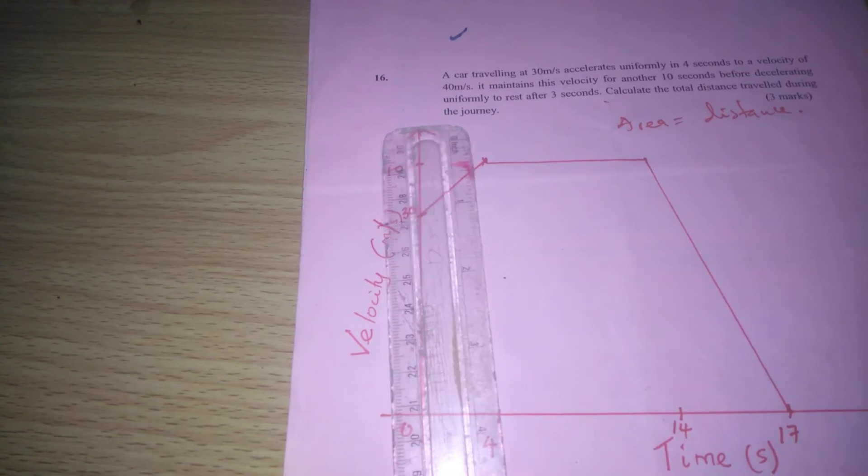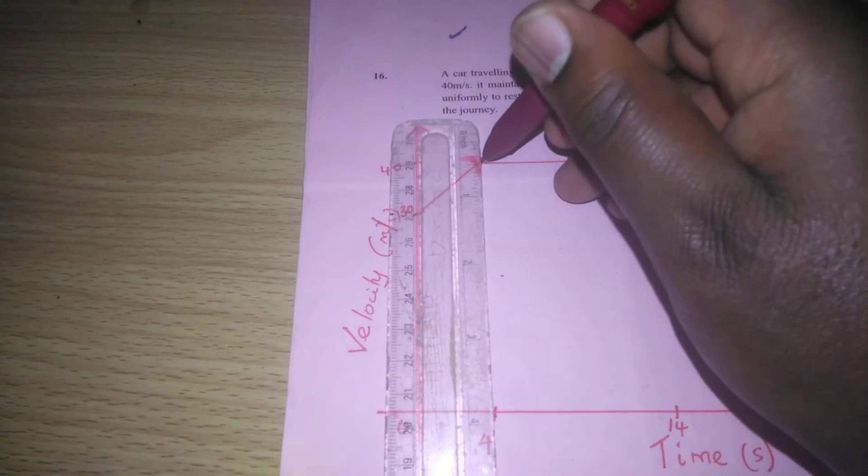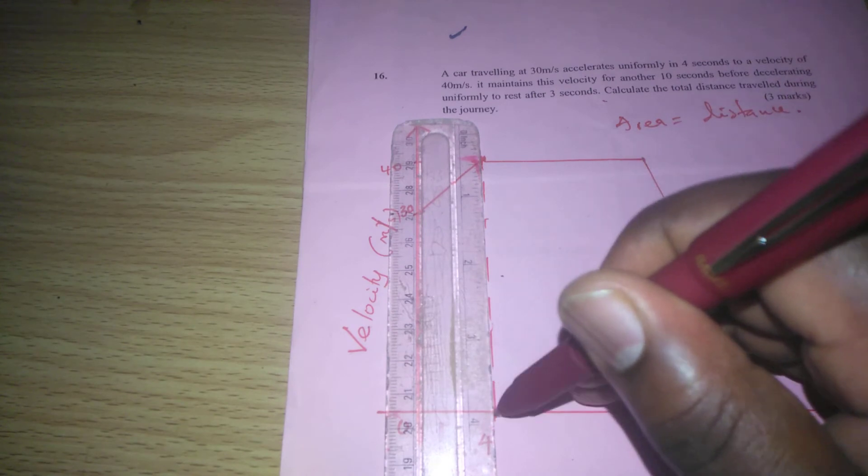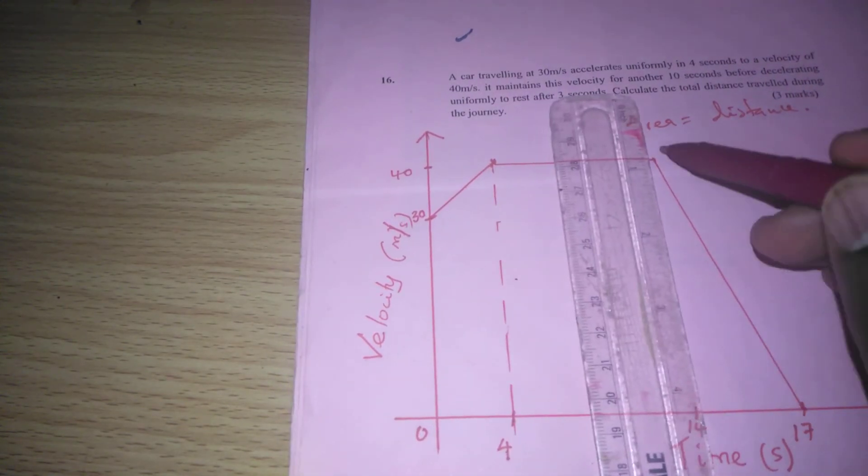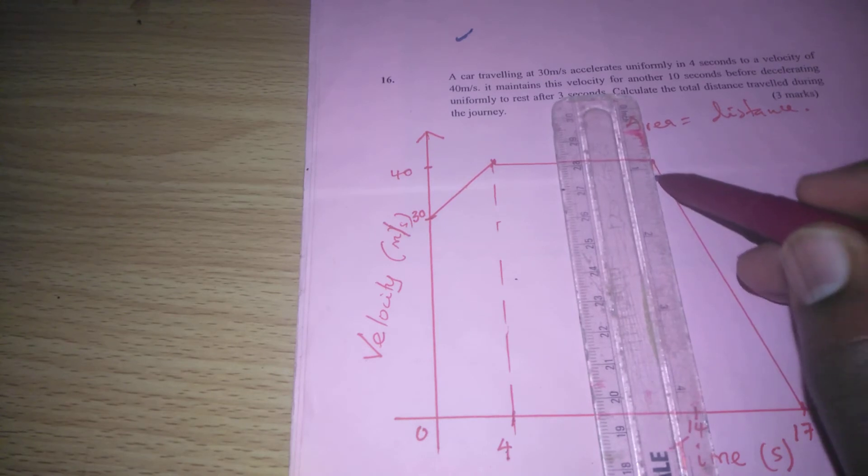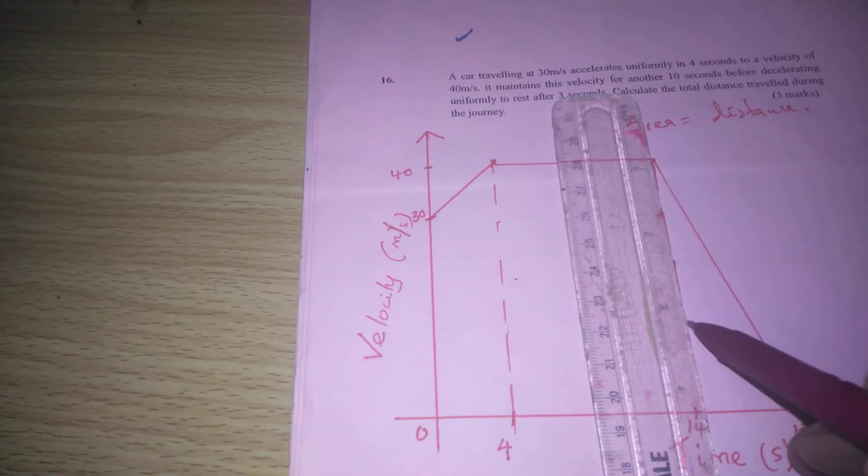We can divide the first portion into a trapezium. The first shape is a trapezium. We have another one here, which is a rectangle. And finally, we have a triangle.